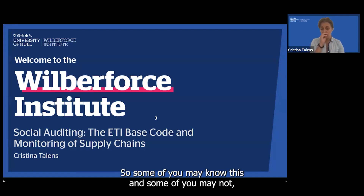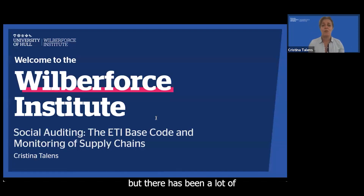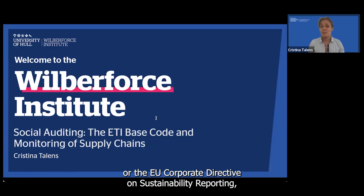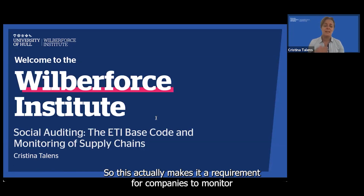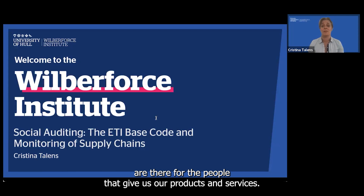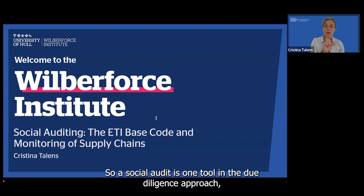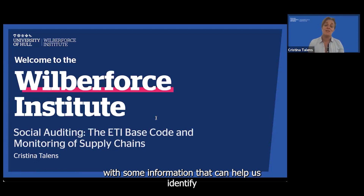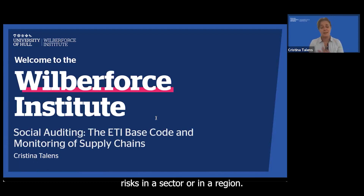Some of you may know this and some of you may not, but there has been a lot of recent legislation, such as the Modern Slavery Act in the UK, or the EU Corporate Directive on Sustainability Reporting, which is focused on due diligence in supply chains. This actually makes it a requirement for companies to monitor labour and human rights, and to work towards ensuring that decent living and working conditions are there for the people that give us our products and services. A social audit is one tool in the due diligence approach — it's one tool, but it does provide us with some information that can help us identify risks in a sector or in a region.